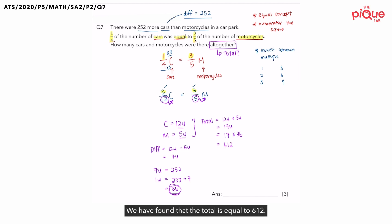We have found that the total is equal to 612. So, can we just put down 612 and leave this as our final answer? What is the question asking for? We are talking about cars and motorcycles, which means that we are talking about vehicles.